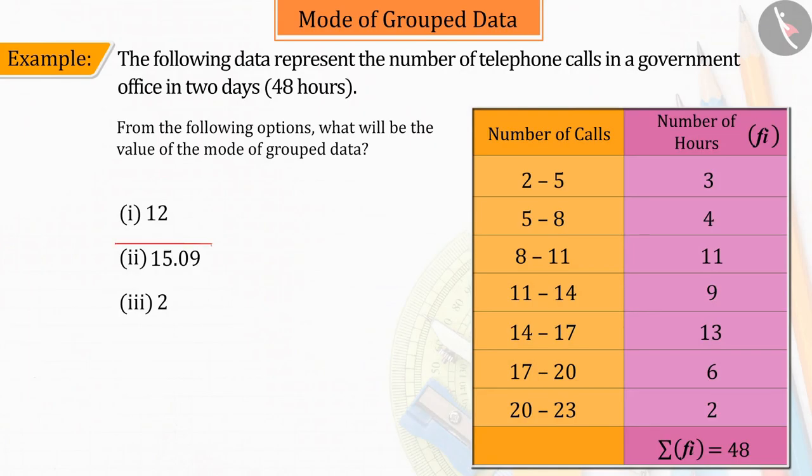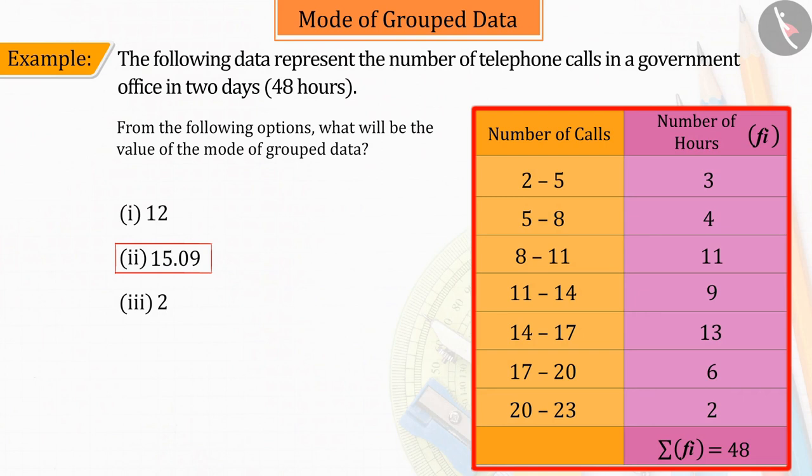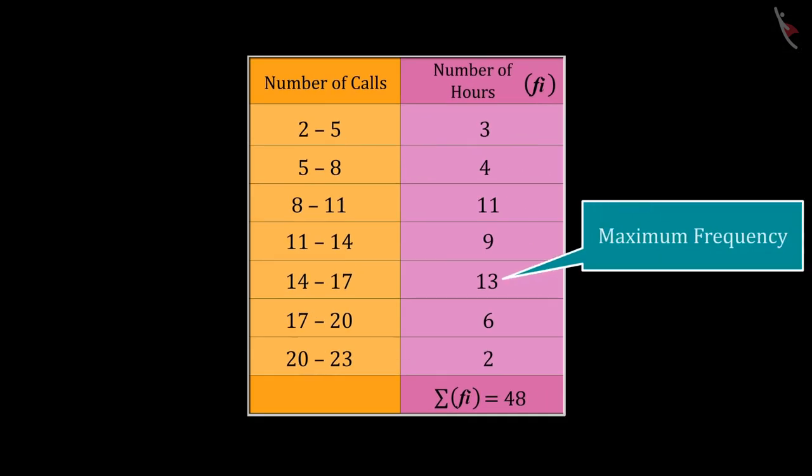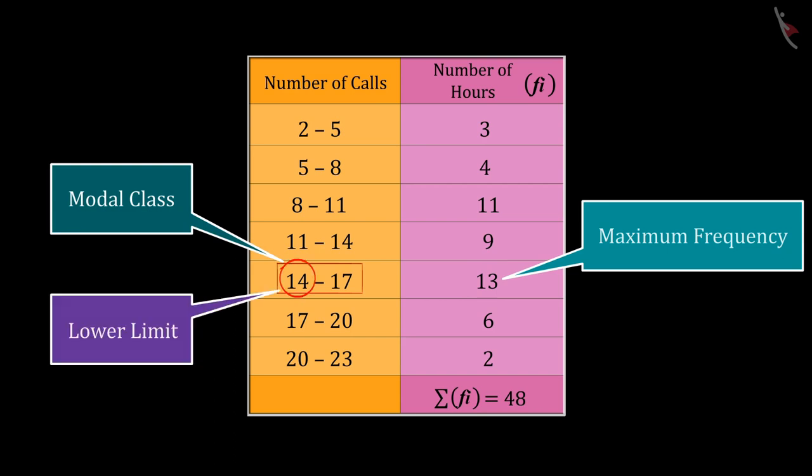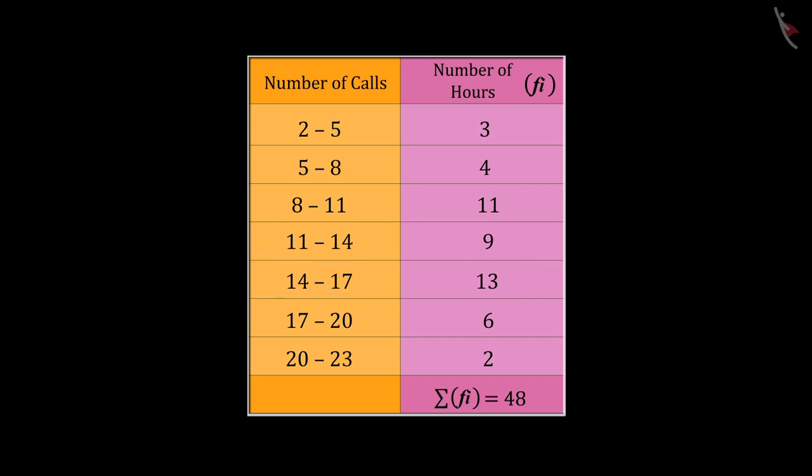Let's discuss option 2. We know that to find the mode, we first need to choose the maximum frequency of the data. So, from the given data, we can tell that the maximum frequency here will be 13, whose modal class is from 14 to 17, where 14 is the lower limit of the modal class. From the above table, we can see that the size of each class interval is same. Therefore, the size of class interval will be 3.